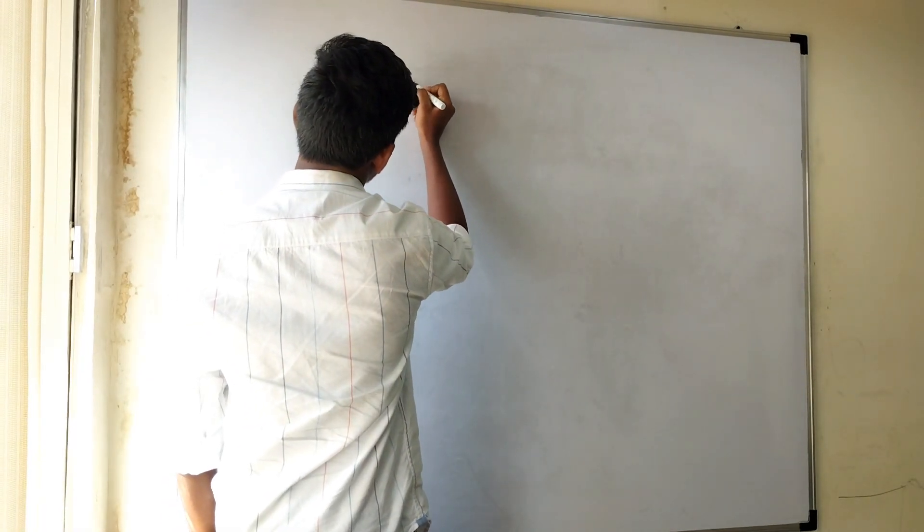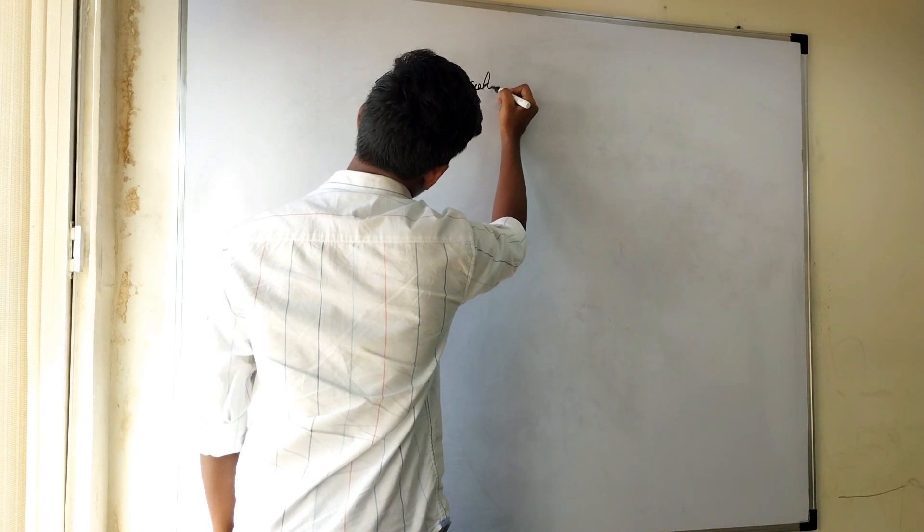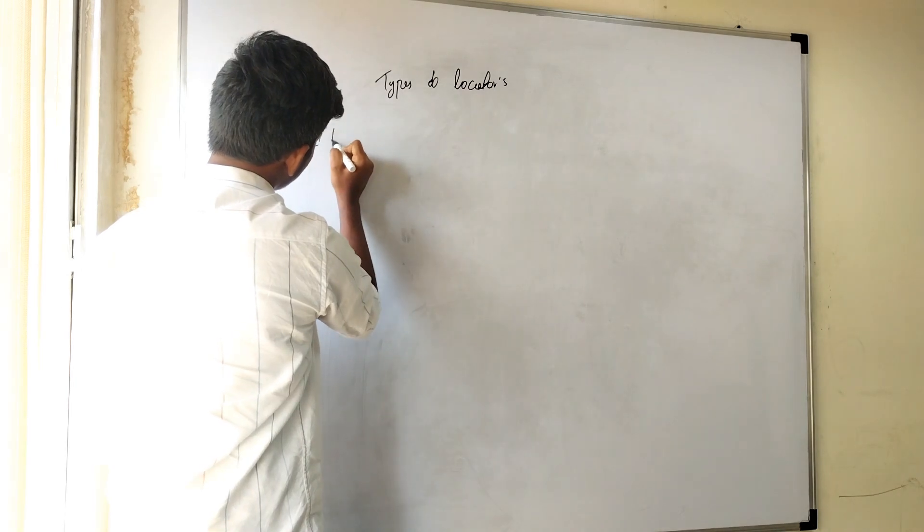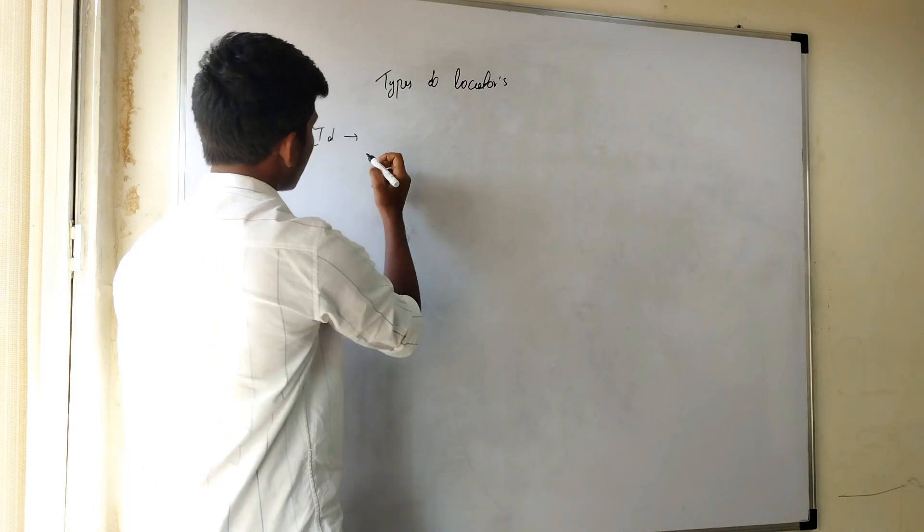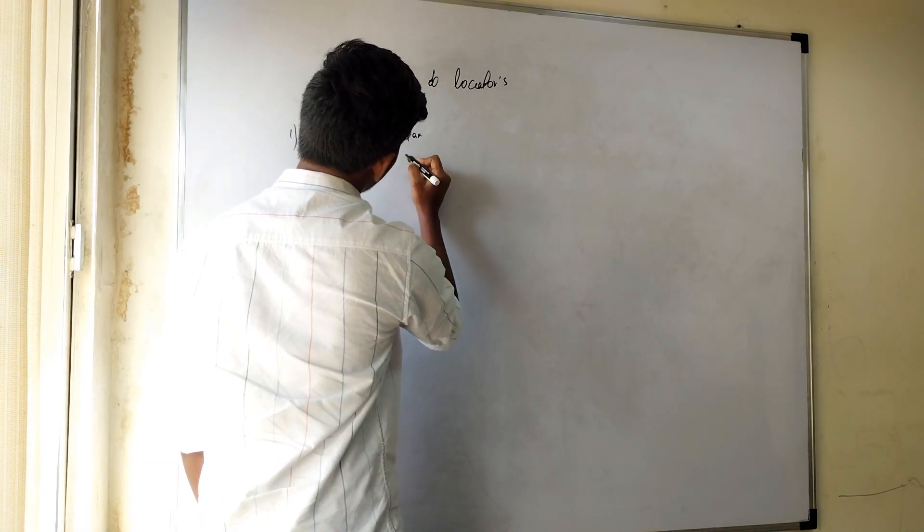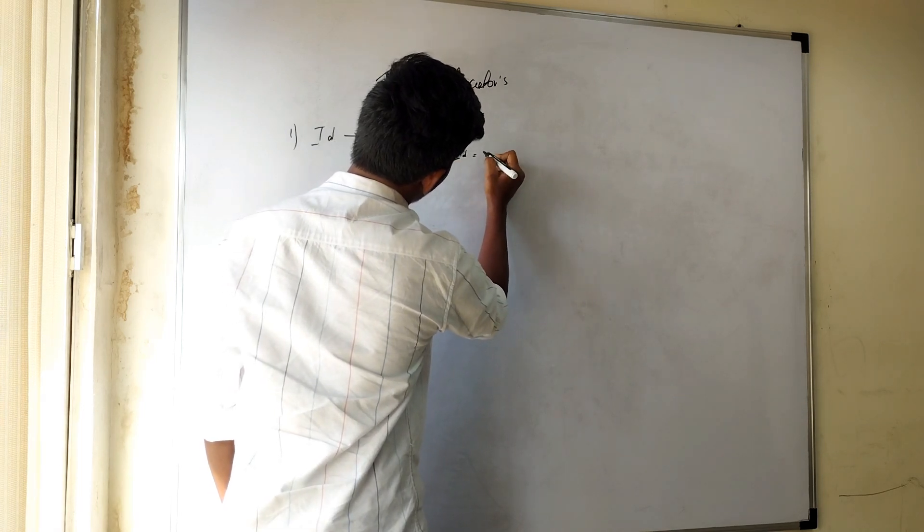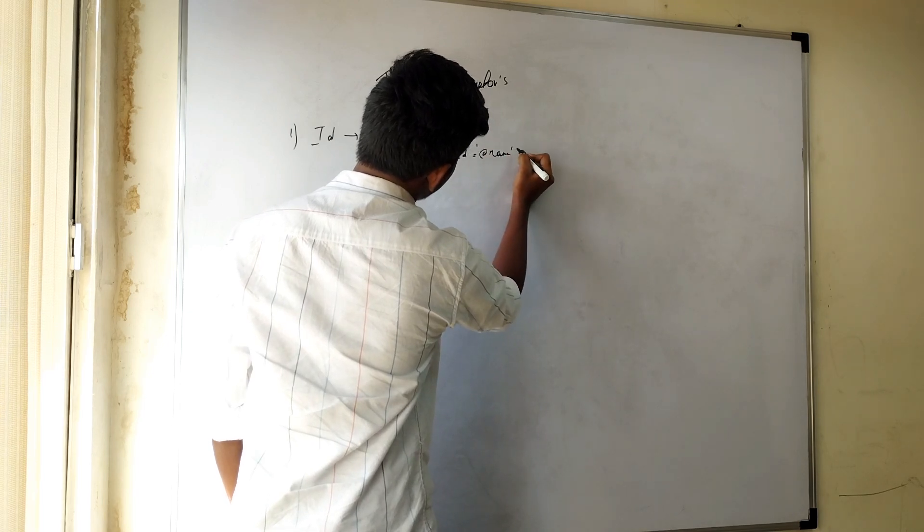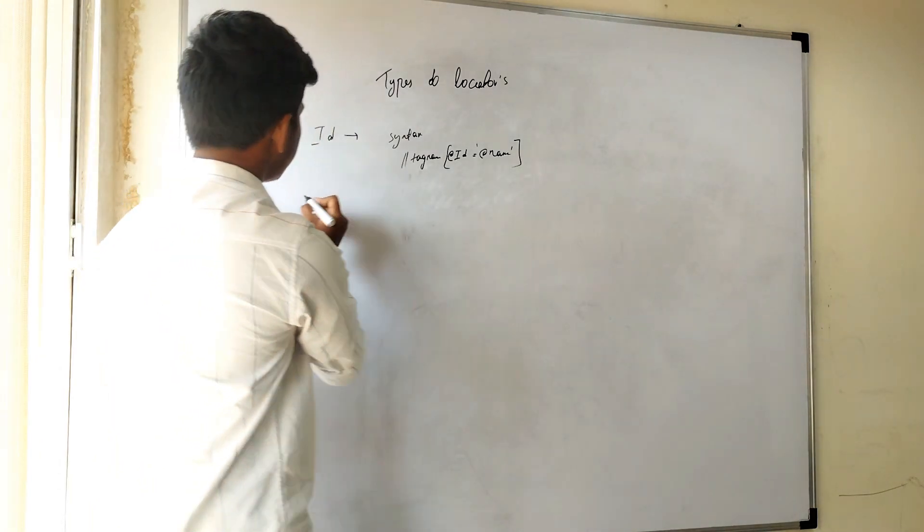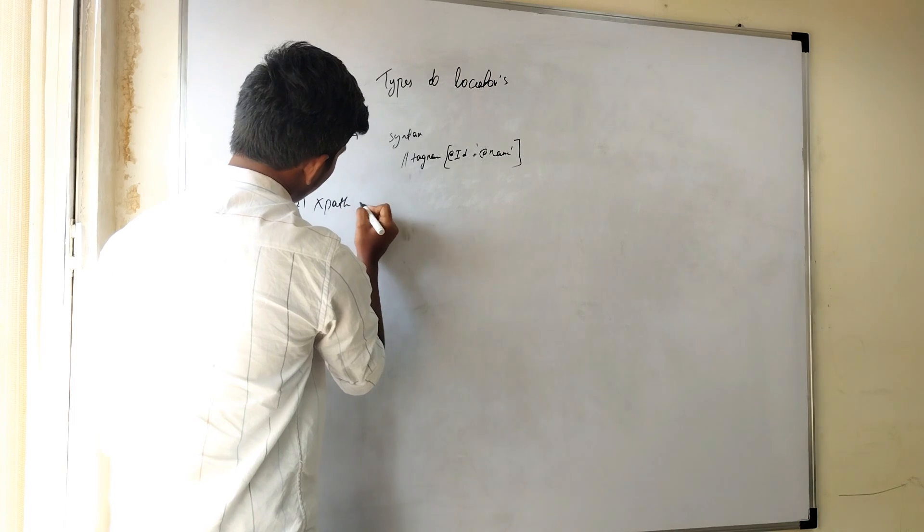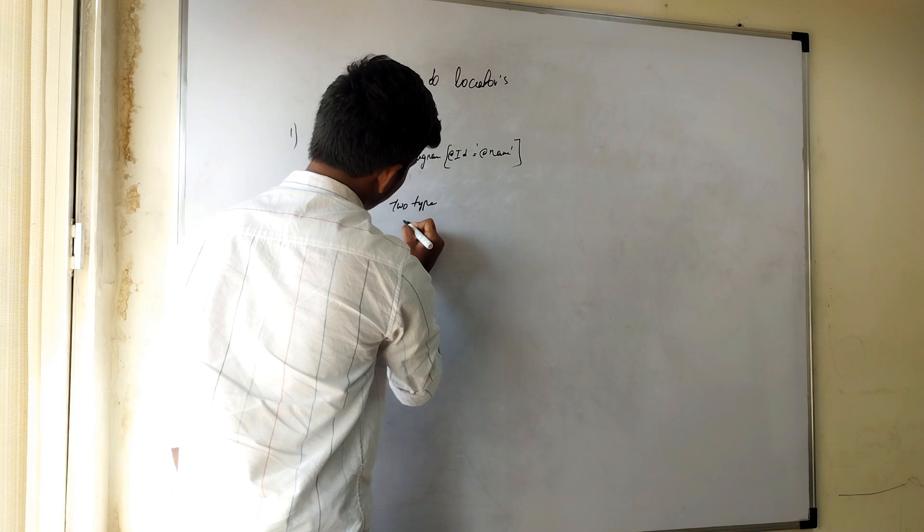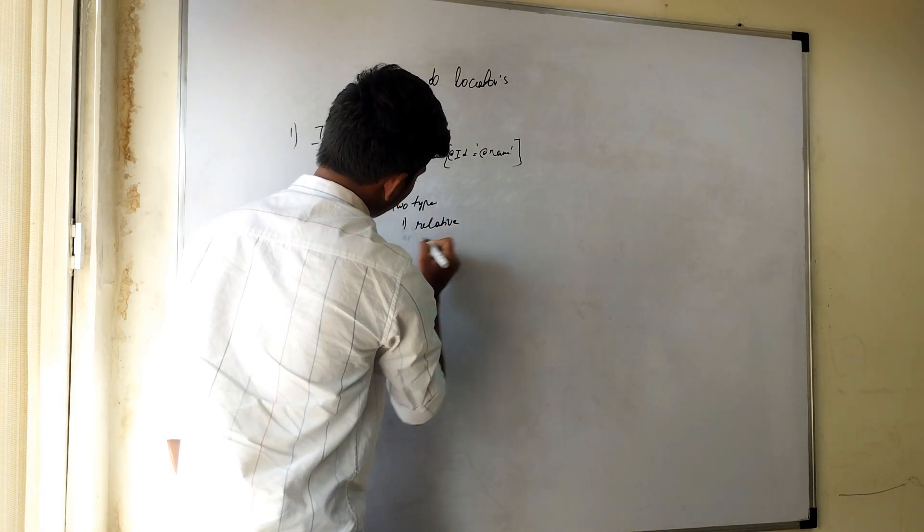Types of locators. In every locator we have different types of syntaxes. Can you explain briefly? Yes. Thank you. Types of locators. First one is ID. We can also find the web element depending upon the ID. We write the syntax like, first tag name, and here we write ID, at the rate of ID and ID name. Second one is xpath. In xpath there are two types. First one is relative xpath. Second one is absolute xpath.